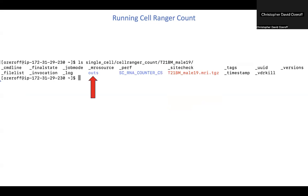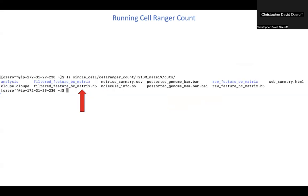These output directories contain all of the output files from CellRanger count. If you were to cd into one of these, you would see a number of files as well as this outs subdirectory, which is what actually contains our .h5 filtered count matrix, which we could now analyze using the R software Seurat.